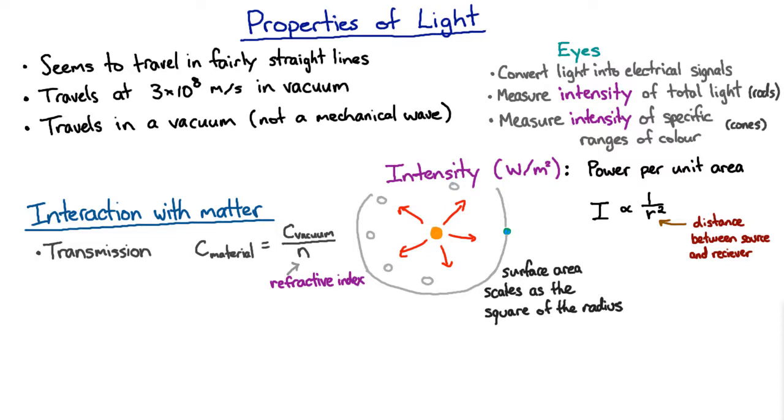If light comes in at an angle to a boundary between two materials where the refractive index changes, and therefore the speed changes, then that changes the direction of the light. In this diagram we're describing the direction that the light takes as the form of a ray. This is often called the ray model of light.